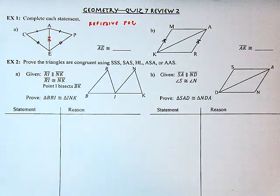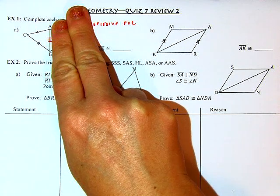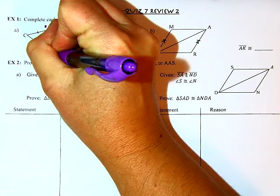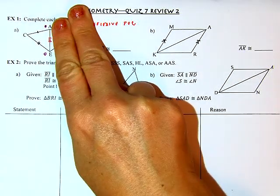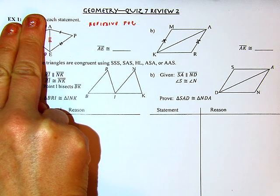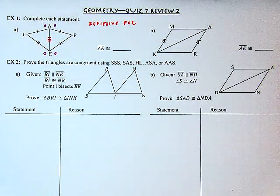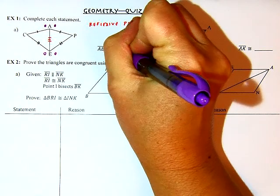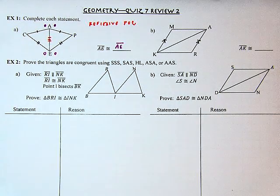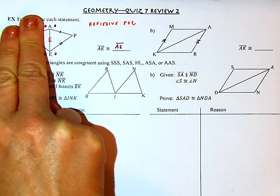Now I have to think about how I write the congruence statement. If I look at this triangle, I'm going from A to E — in between the single and triple tick mark sides to start. For the second triangle, looking for the same starting position, it still reads A to E. So A E is congruent to A E. We did not have to switch the order. It ends up being the same direction: A to E, A to E.